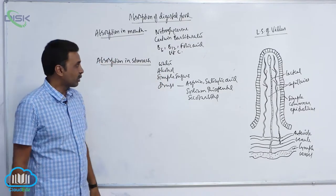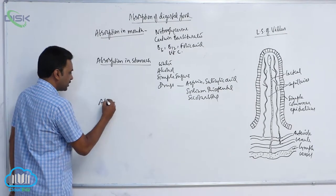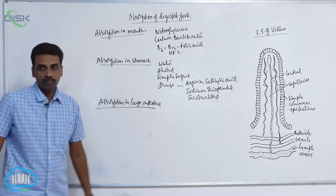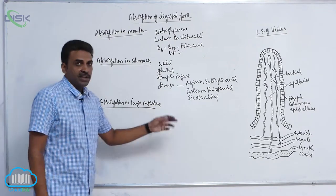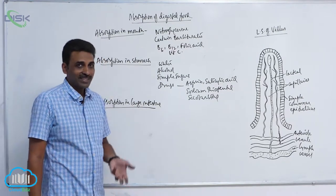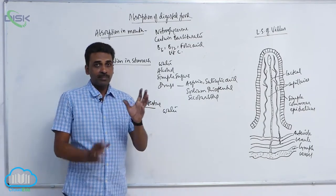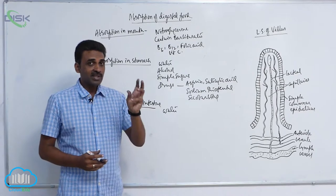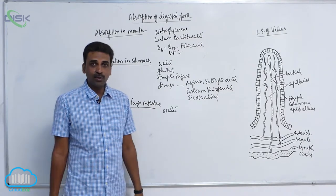Simple sugars, alcohol, and water are all absorbed through the stomach. Absorption in the large intestine: about one and a half liters of food material enters the large intestine, but only 150 ml exits as fecal matter. That means approximately 1.35 liters of water is absorbed inside the colon.